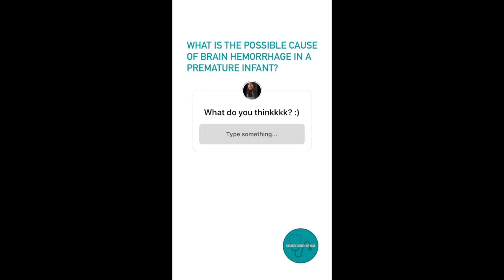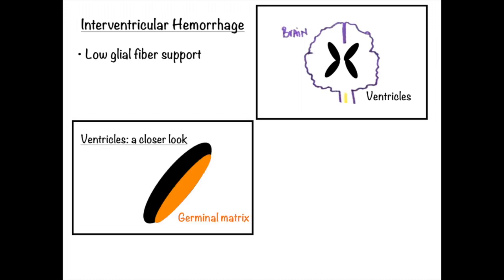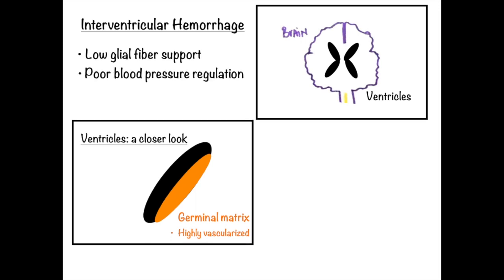Question 6: What is the possible cause of brain hemorrhage in a premature infant? Brain hemorrhage in premature or low birth weight infants is due to low glial fiber support. The hemorrhage takes place within the ventricles of the brain. The germinal matrix has many blood vessels and can lead to intraventricular bleeding. Low glial fiber support along with impaired regulation of blood pressure in the brain predisposes them to this condition.